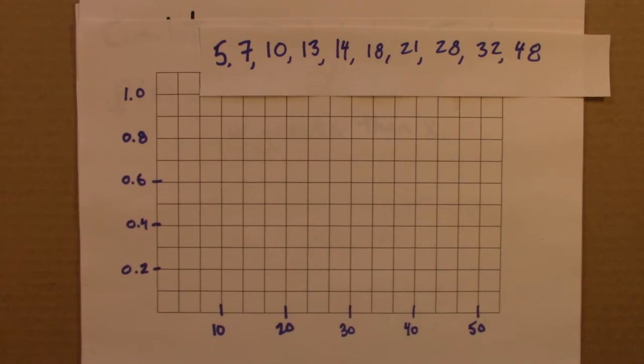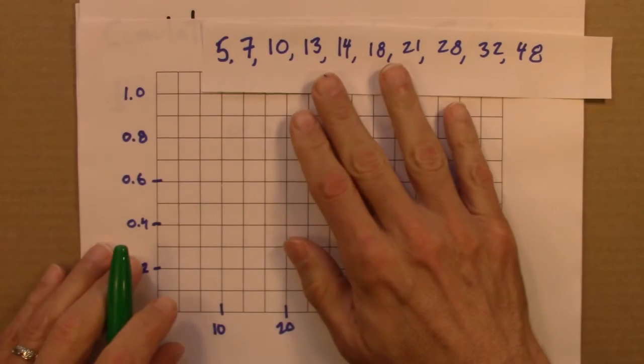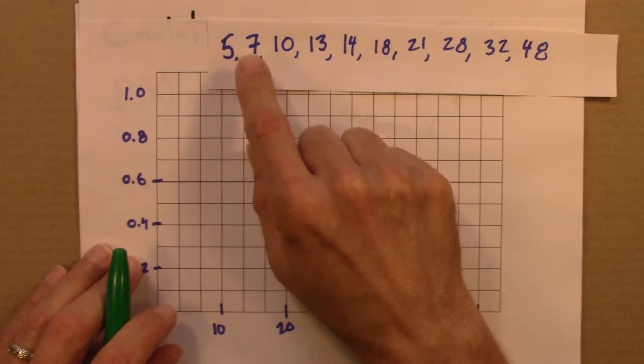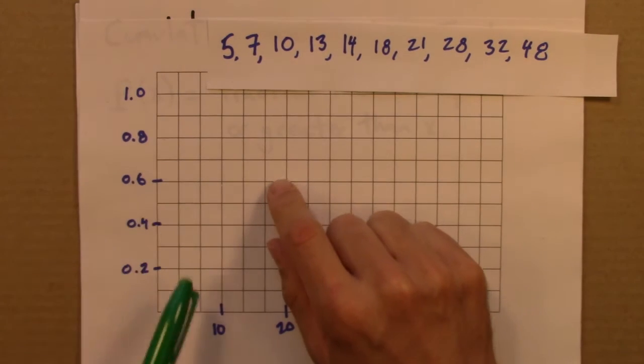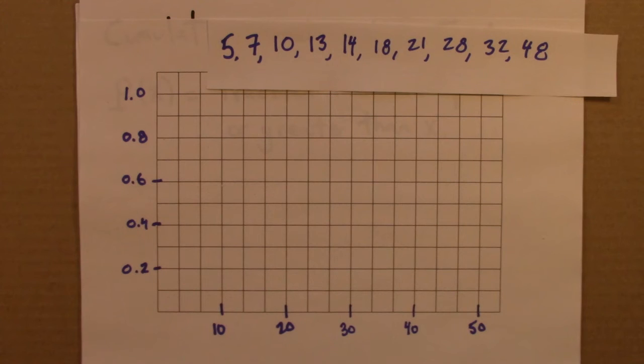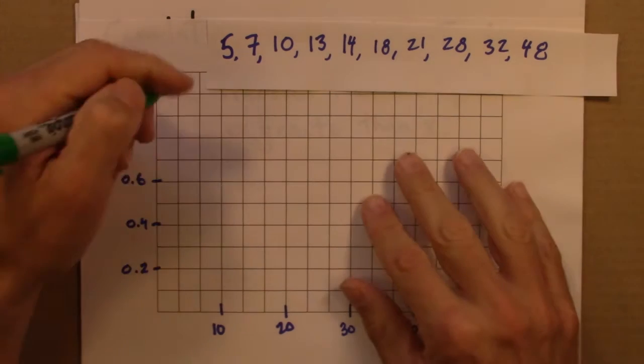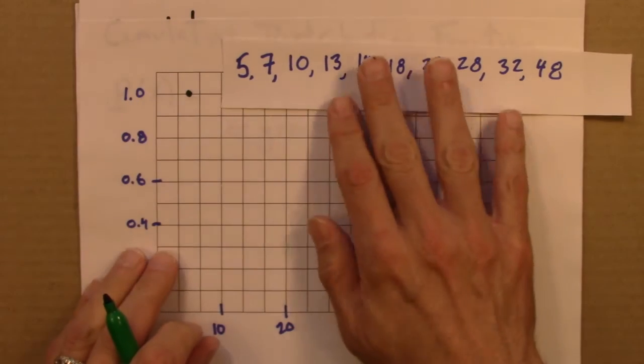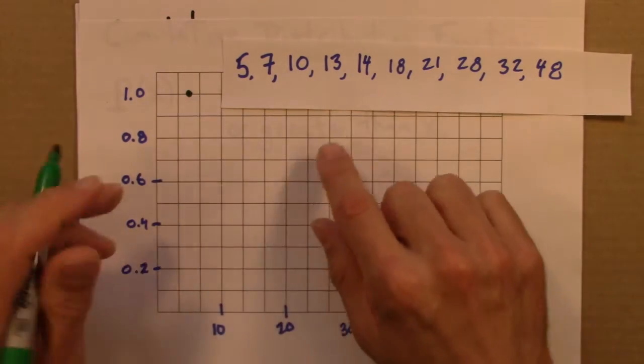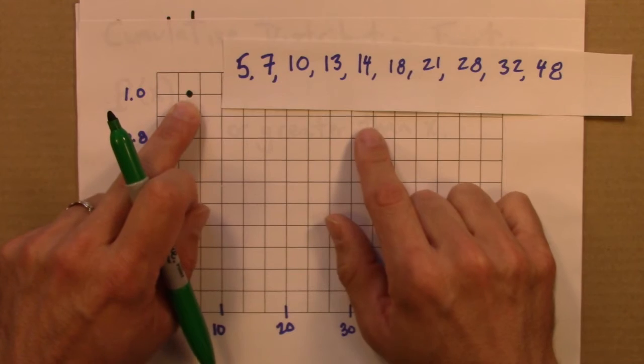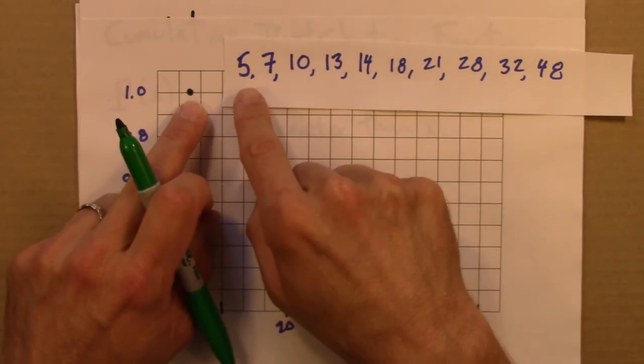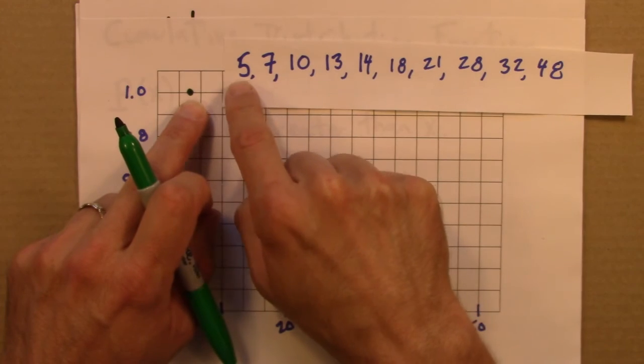Alright, so let's start by thinking about what's going on at 5. So 5, that's the point, that's right here. And I'm going to put a mark of 1 right here. Why? Because 100%, all of my data is equal to 5 or greater.